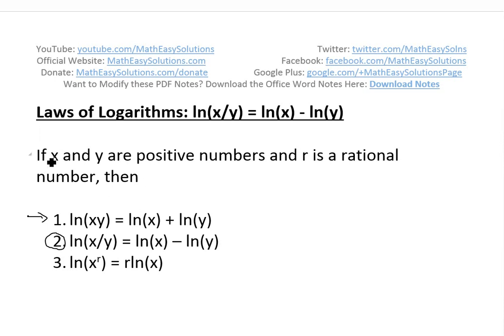Basically to go over these laws, if x and y are positive numbers and r is a rational number, like I showed in my earlier video, rational numbers are just any number that you could write as integers, let's say 2 over 3, that's a rational number, 2 is a rational number, 1 over 3, that's also rational. So anything you could write in integers where the bottom is not 0.